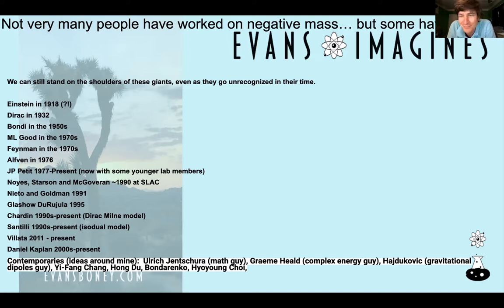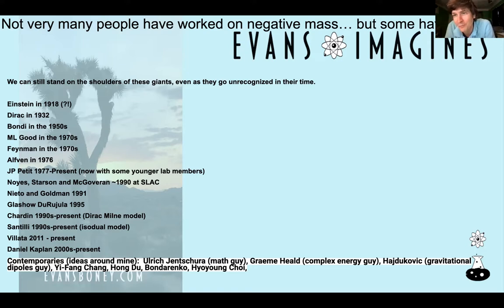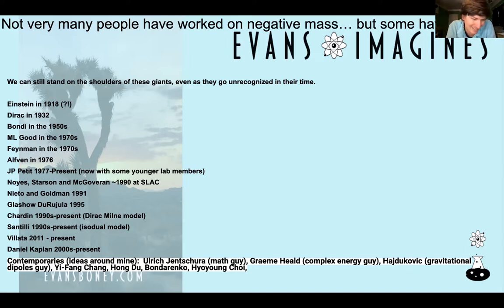Feynman in the 70s — like I said, nobody takes Feynman seriously on this. They wish they didn't have to take him seriously about anything, but he invented a bunch of stuff. Alfvén in '76 has some good papers. A lot of good Russians too. I don't even think I put Narlikar on here. Hoyle and Narlikar have some stuff to say, but that's really just a confusion and not really about negative mass. Go read the Hoyle-Narlikar cosmological theory if you want.